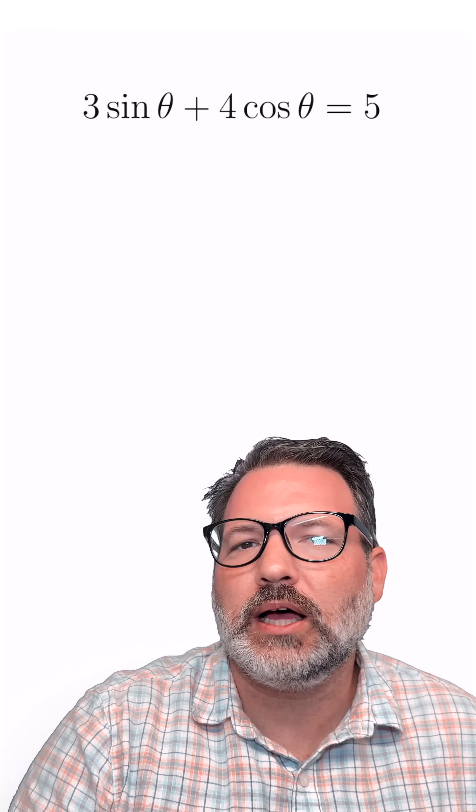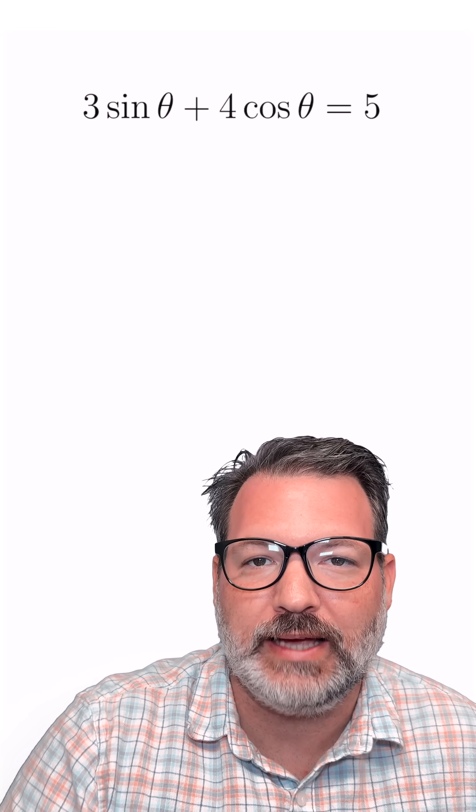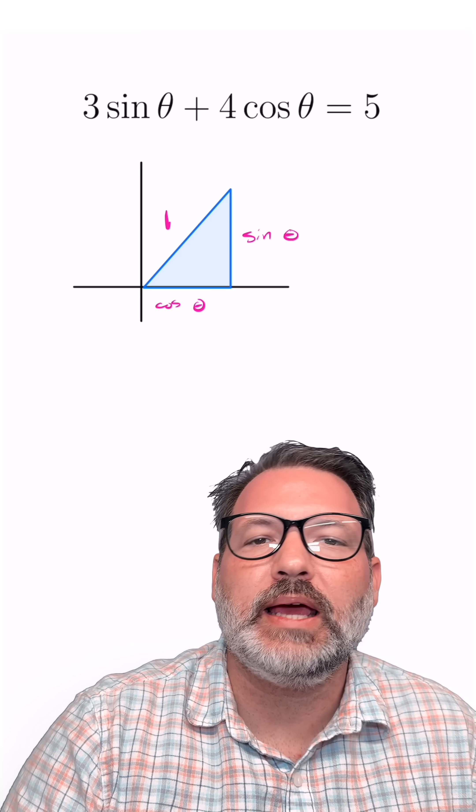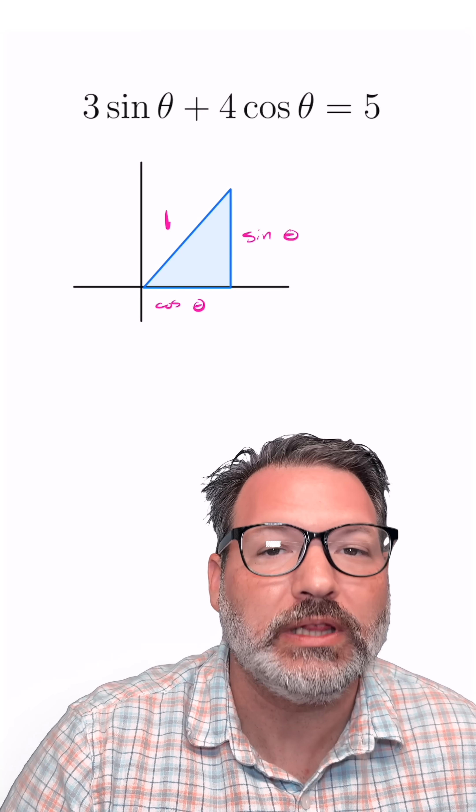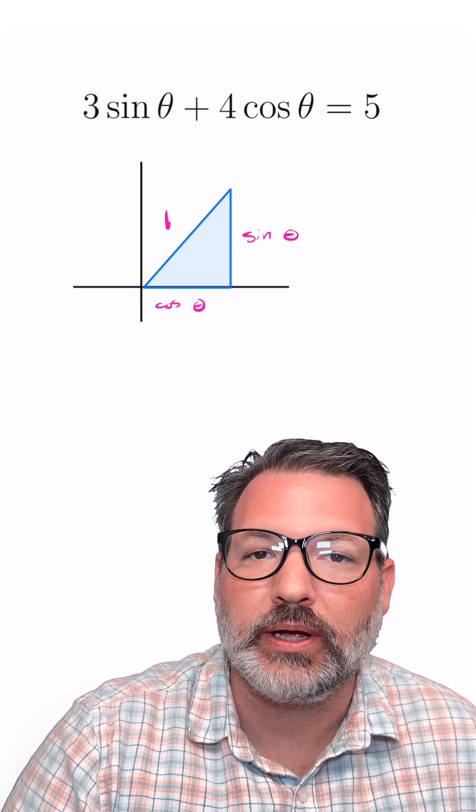Anytime you're looking at a sum of sine and cosine, one thing that should come to mind is what's called the Pythagorean identity. Because we can represent sine and cosine as the actual leg lengths for a right triangle, there is this particular relationship that comes out of the Pythagorean theorem.